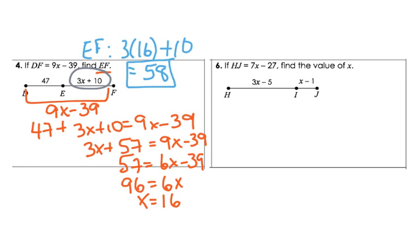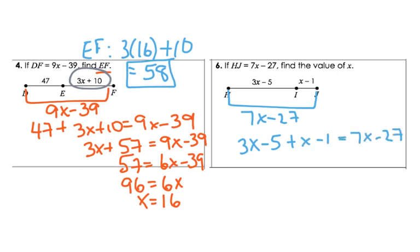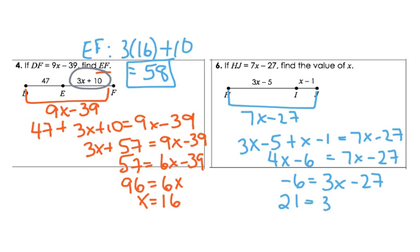For number 6, HJ is 7X minus 27. Find the value of X. Add HI plus IJ: 3X minus 5 plus X minus 1 equals 7X minus 27. Combine like terms: 4X minus 6 equals 7X minus 27. Subtract 4X: negative 6 equals 3X minus 27. Add 27: 21 equals 3X. Divide by 3: X equals 7.